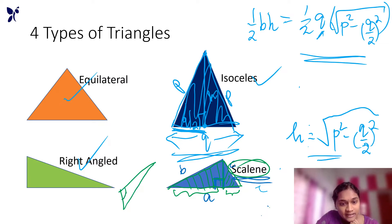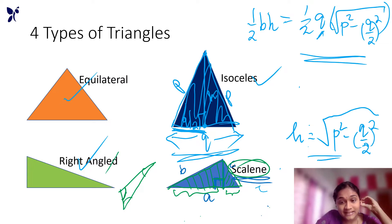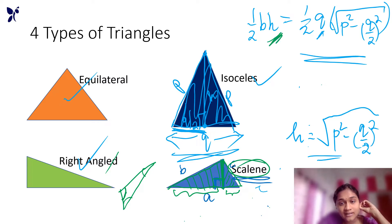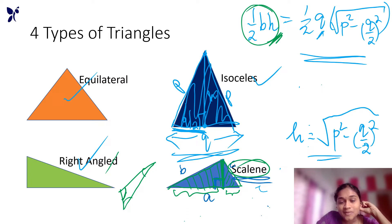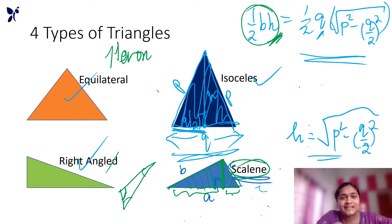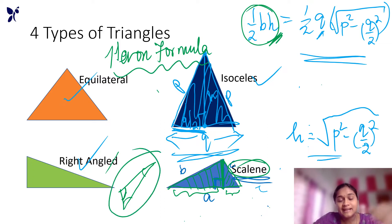This is the area of the isosceles triangle. That's why we use Heron's formula — this is why we use the entire concept of Heron's formula. We use this for a scalene triangle using the lengths of the three sides A, B, C.